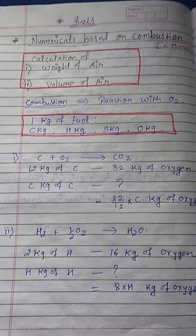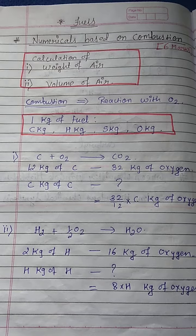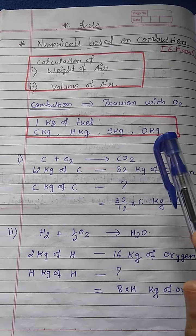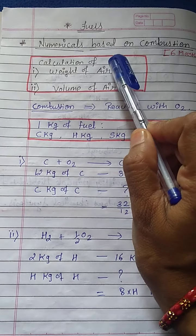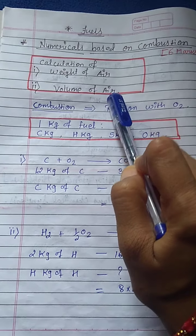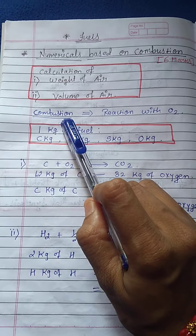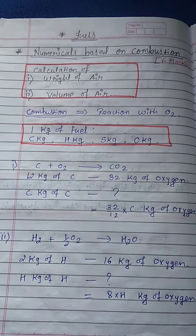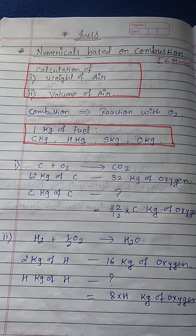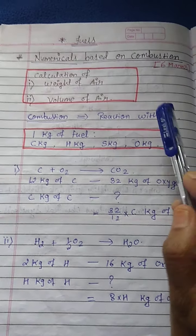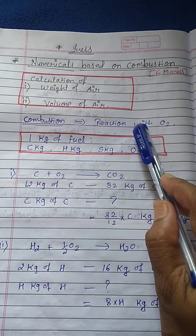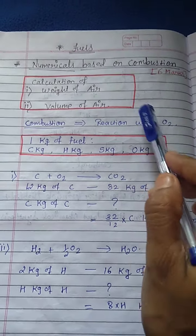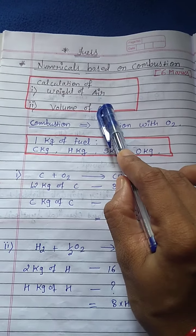Hello students. In today's lecture we are going to learn how to solve numericals based on combustion. In this type of numerical we have to calculate two things: first, weight of air, and second, volume of air. First we will see what is combustion — combustion is when all the elements present in the fuel react in definite proportion with oxygen. First we will calculate the amount of oxygen needed for combustion, after that we will convert that amount into weight of air and volume of air.